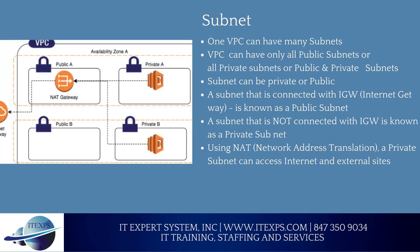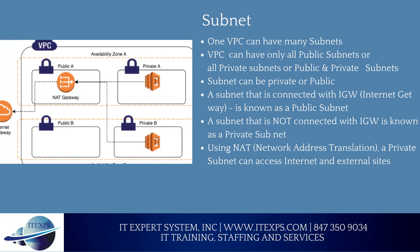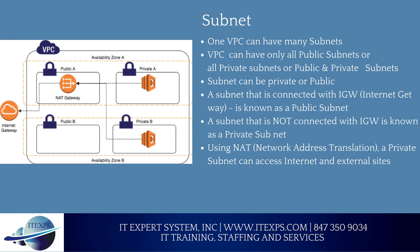Subnet: One VPC can have many subnets. A VPC can have all public subnets, all private subnets, or a mix of public and private subnets. A subnet connected with an IGW (Internet Gateway) is known as a public subnet; a subnet not connected with an IGW is a private subnet. Using NAT (Network Address Translation), a private subnet can access the internet and external sites.